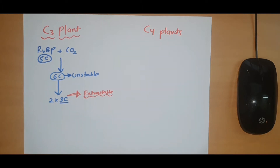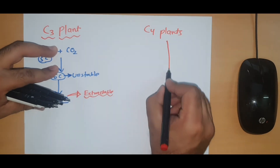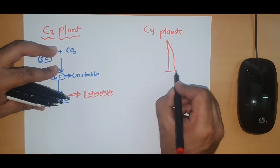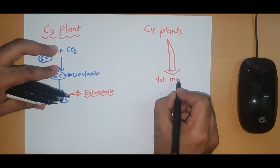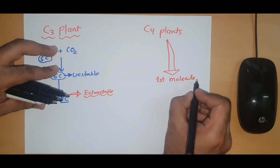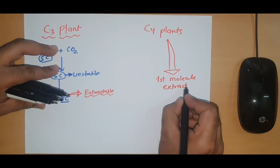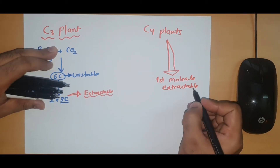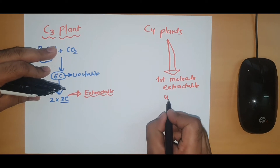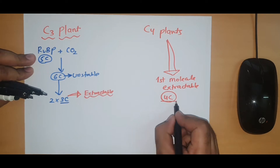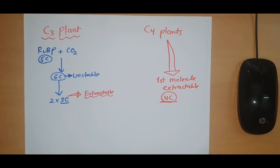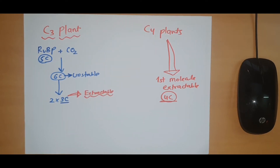Now the question is: what are C4 plants? In C4 plants, the first molecule which is extractable during the photosynthesis process is a 4-carbon compound. As the first extractable molecule is a 4-carbon compound, that is why these plants are called C4 plants.